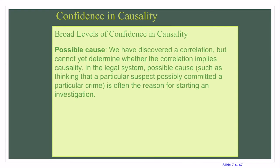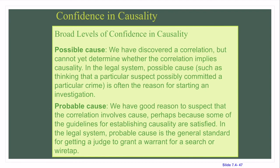There are different levels of confidence in causality. Possible cause means we've discovered a correlation but cannot yet determine whether the correlation implies causality. In the legal system, possible cause is often the reason for starting an investigation. Probable cause means we have good reason to suspect that the correlation involves causality, perhaps because some of the guidelines for establishing causality are satisfied.